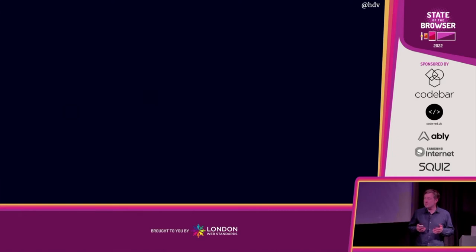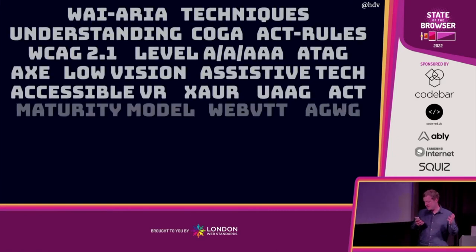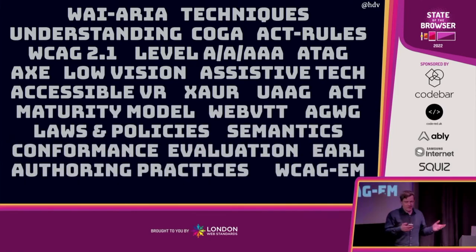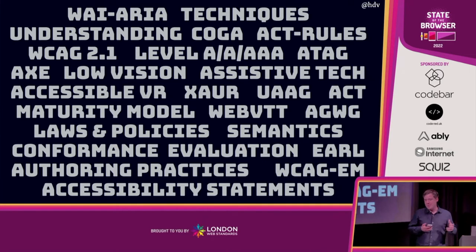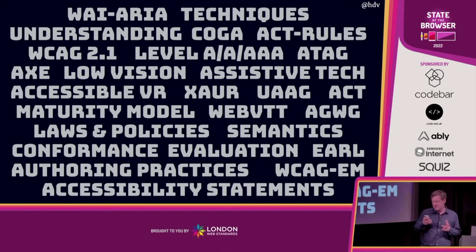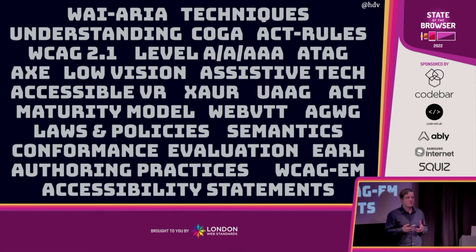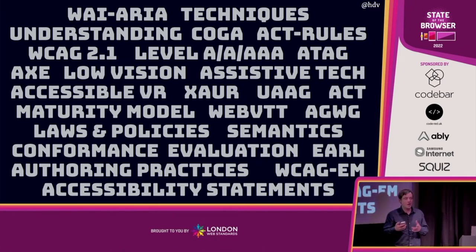I can see why people think accessibility is very hard to do. Because there are a lot of acronyms. There is WAI-ARIA, there are different techniques and understanding documents that come with WCAG. There is COGA, which is cognitive guidance. There are rules for testing. There's WCAG 2.1, but also 2.2 coming up, and 3 at the same time. There's different levels within WCAG. There's ATAG specifically for authoring tools. Basically there are a lot of different things to worry about when you do accessibility, so I can see why people sometimes feel a bit down.